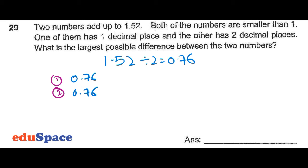As the question says, one of the numbers has one decimal place, meaning we will bring 0.06 to the second number. This will become 0.7 and 0.82. The question asks what is the largest possible difference, so we will bring another 0.1 to number two.